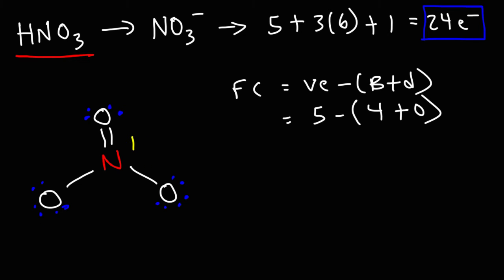Thus, the nitrogen has a positive formal charge. Now, let's calculate the formal charge of the oxygen on top. So oxygen has 6 valence electrons. In this structure, it has 2 bonds, and it has 2 lone pairs, which is 4 dots. 2 plus 4 is 6, so it's 6 minus 6, which is 0. Thus, whenever oxygen has 2 bonds, it's going to be neutral in charge.